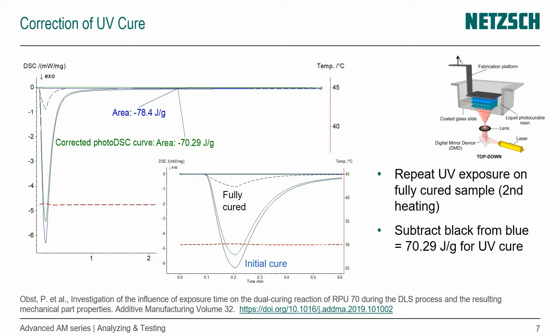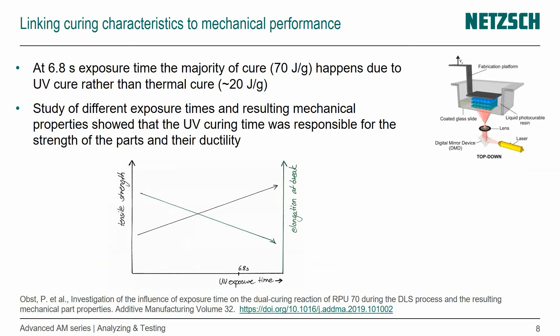Now we know for this exposure of 6.8 seconds how the UV cure enthalpy and the thermal cure correlate. We see that for the 6.8 seconds, really the majority of the cure — 70 J per gram — happens due to the UV cure, rather than the thermal cure, which was only roughly 20 J per gram.